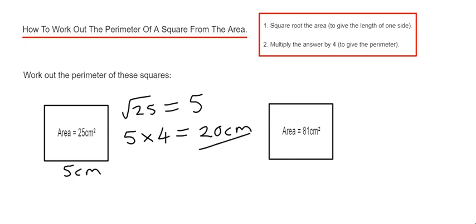Let's move on to example two. This time we have an area of 81 cm². Again, if we square root the area, the square root of 81 is 9, because 9 times 9 is 81.